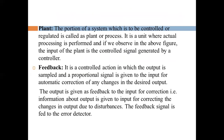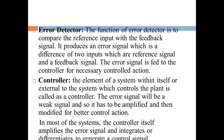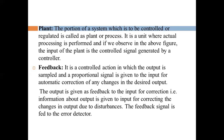A servo mechanism is generally a closed loop system where feedback signals are used to control position, speed, velocity, acceleration, etc. The servo voltage stabilizer controls the position of the secondary winding using a motor. In servo mechanisms, one of the most important components is the position sensor, which measures the position of the servo motor and converts it into an electrical signal that the control system can use. The plant in a control system is the portion of the system which is to be controlled or regulated.